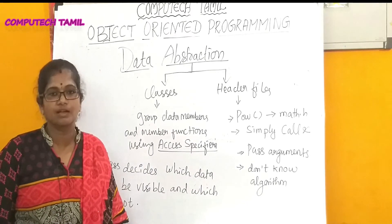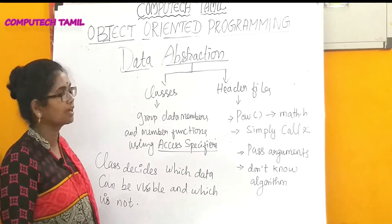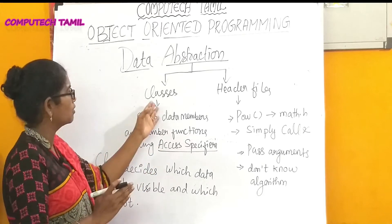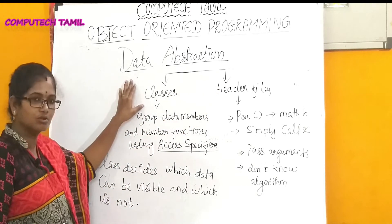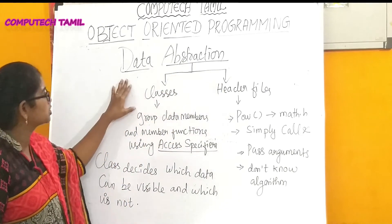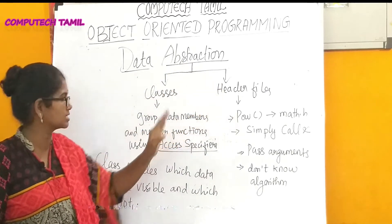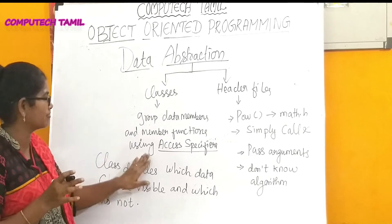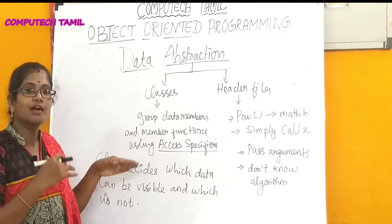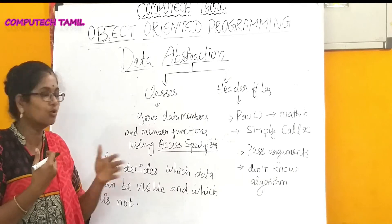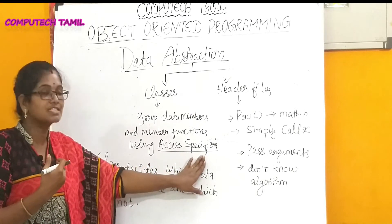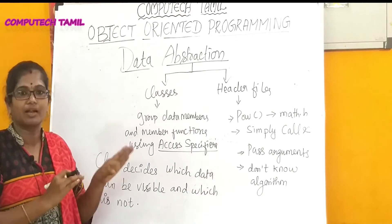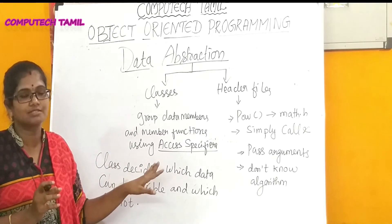Let's look at how abstraction is implemented in object-oriented programming. We can divide abstraction into two parts: using classes and using header files. In a class, we have a group of data members and member functions. We differentiate them using access specifiers. Access specifiers are: Private, Public, and Protected.